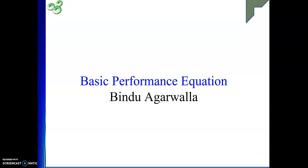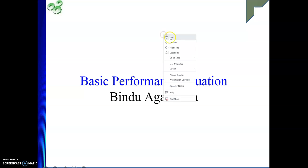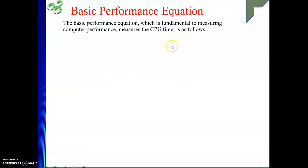This is a small topic. The basic performance equation will measure the performance of your work. My work is executing instructions, and a set of instructions is called a program. So while evaluating performance, we will use one equation, and that equation gives us the time to execute a complete program. The basic performance equation is the fundamental for computer performance — it measures CPU time, which is the time taken to execute a program.